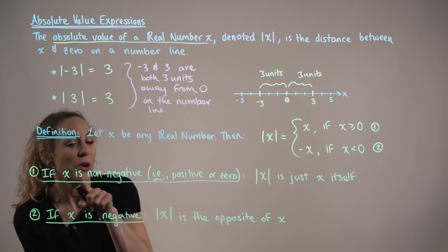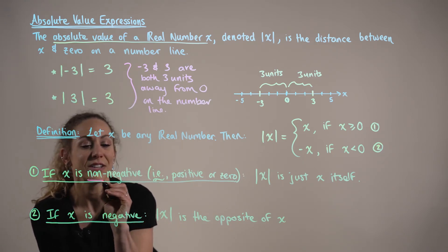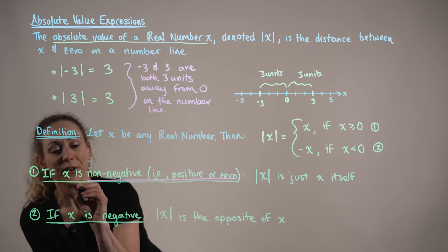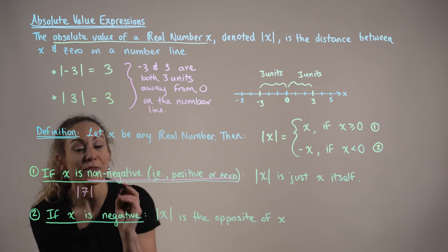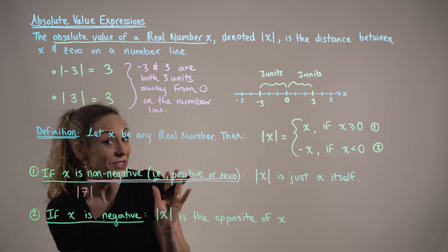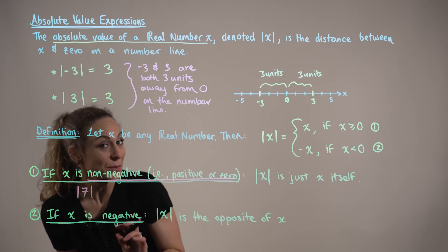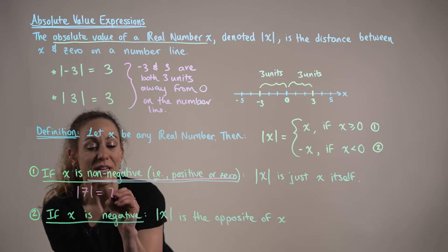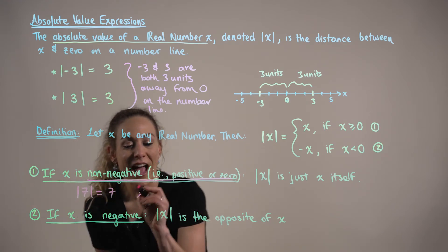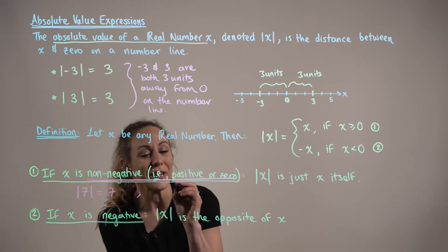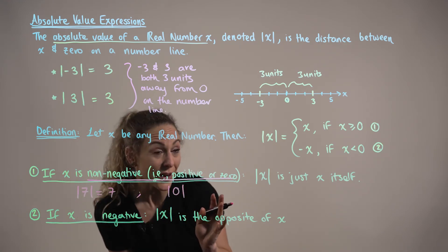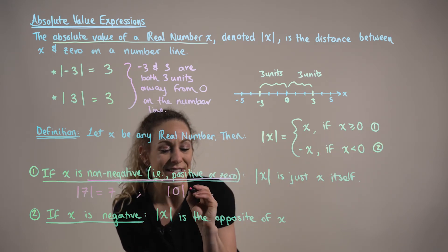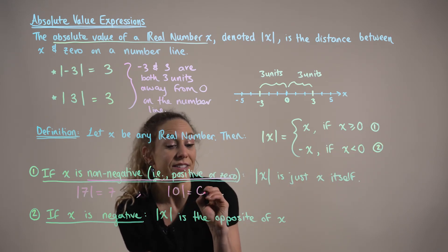For case one, when x is non-negative — positive or zero — if we have the absolute value of seven, since seven is positive and greater than zero, this is simply equal to seven. Very similarly, if we were taking the absolute value of zero, this falls into our first category and it's simply zero.